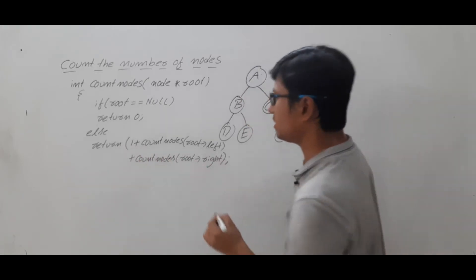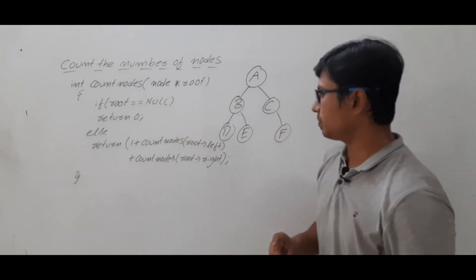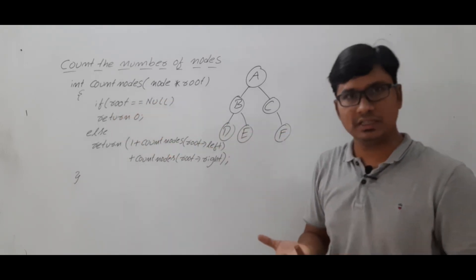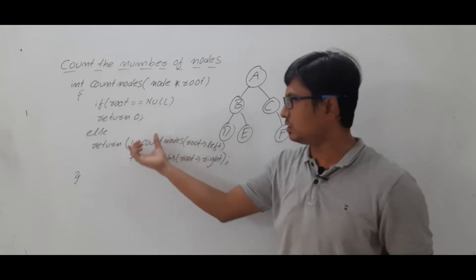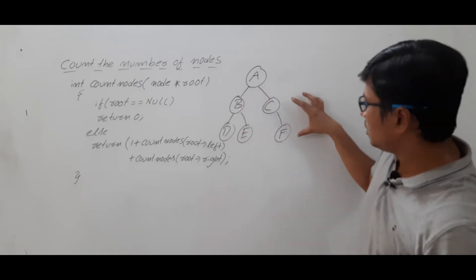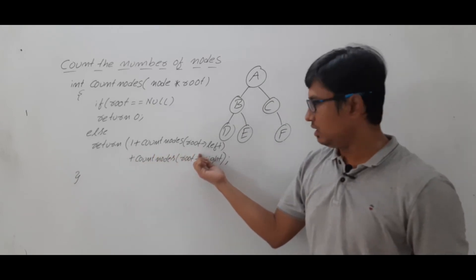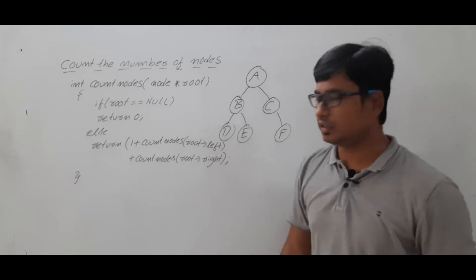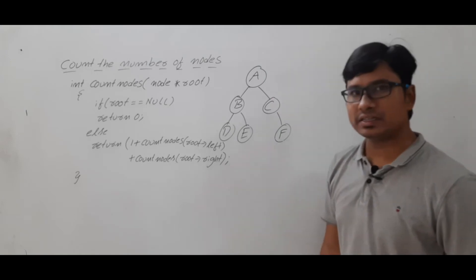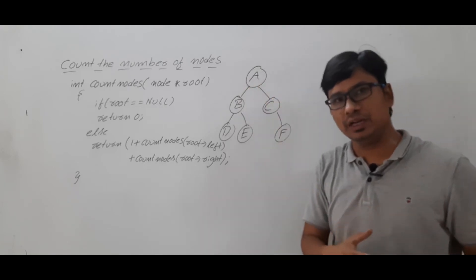At each node, we will check whether the base condition is true or the else block is true, and accordingly execute the program. If root == null, meaning there is no element, in that case return 0. Else, count the number of nodes in the left subtree, count the number of nodes in the right subtree, and return 1 plus those two counts. I will perform the addition and finally return the value.